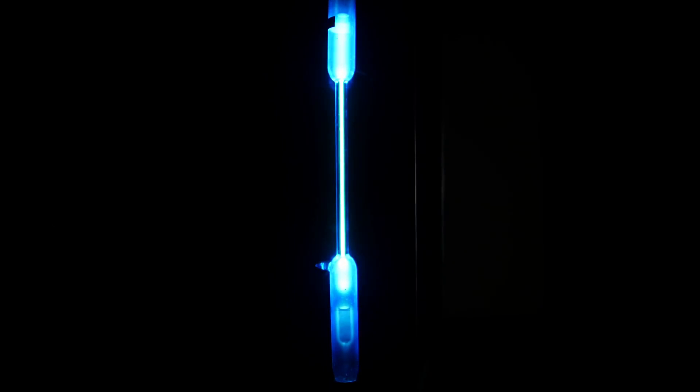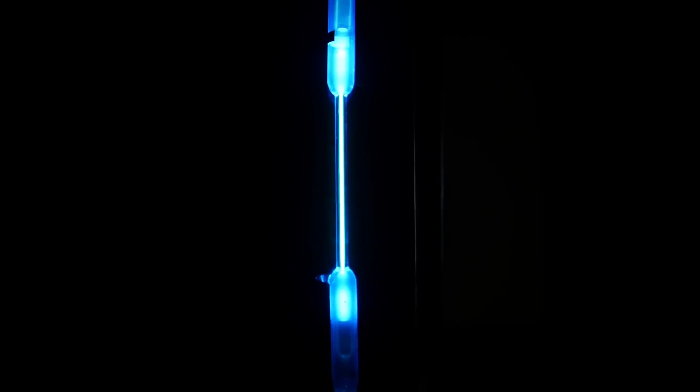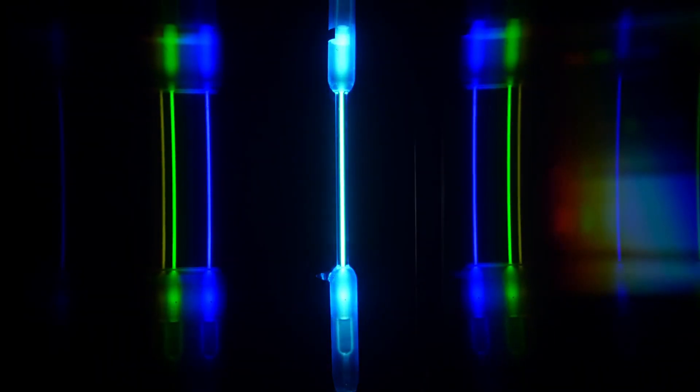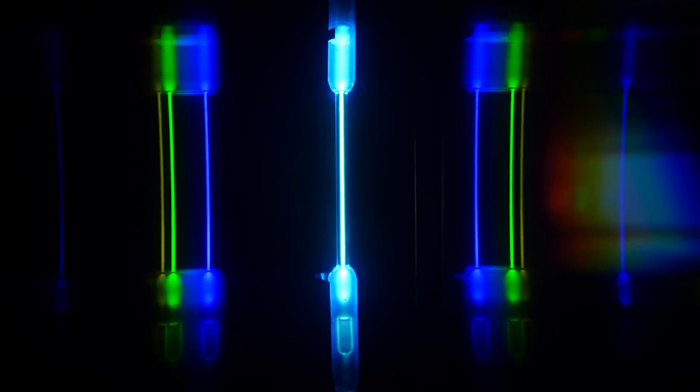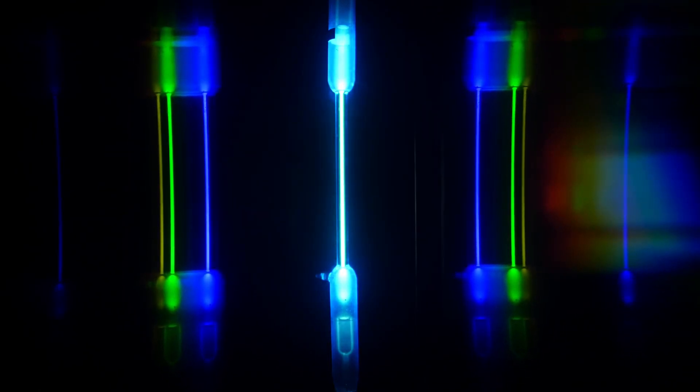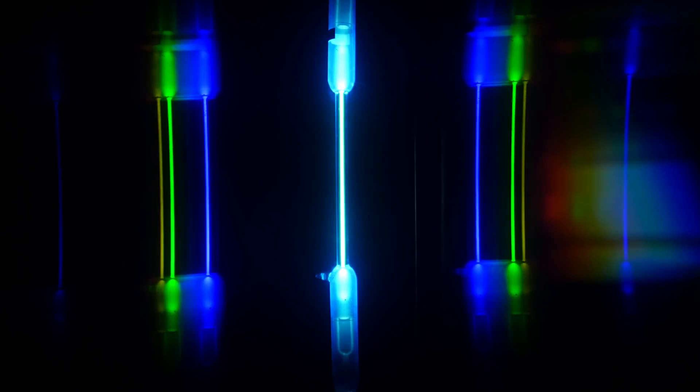There are mercury vapor lights that are used as street lights. So this may look similar to this bluish tint to the mercury vapor. Now let's try it with the diffraction grating in place. And what you see in this case are a green line and a blue line predominantly in this mercury spectrum.